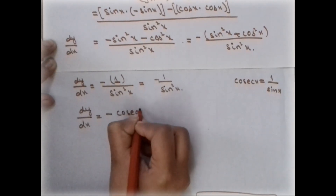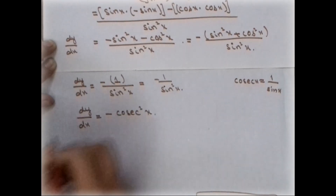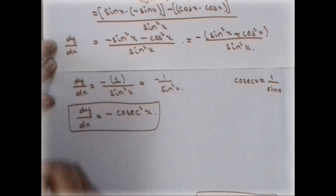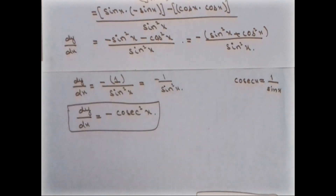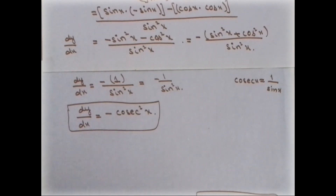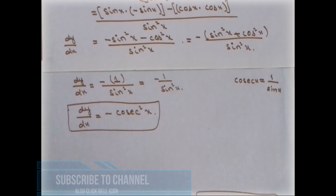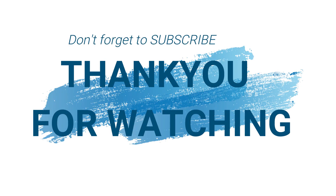So we have proven that if we have a function which is cot(x), then its derivative will be negative cosecant squared of x. This is the complete proof of the derivative of the trigonometric function cot(x). If you like this, don't forget to subscribe, like, and share.